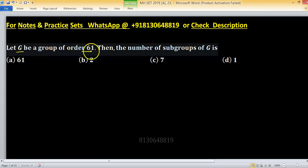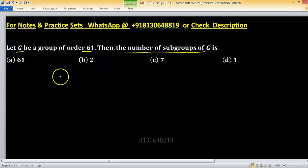Let G be a group of order 61, then the number of subgroups of G. You can find the number of subgroups with the help of tau 61.